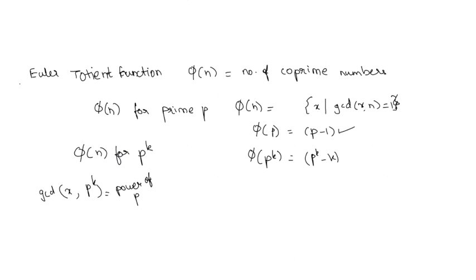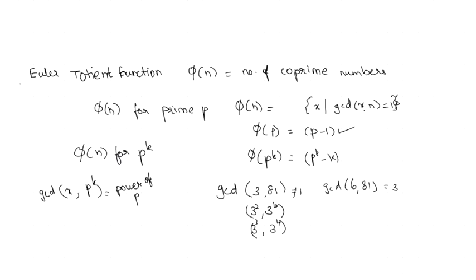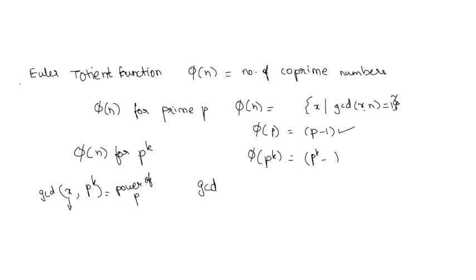Let's take an example: 81, which is 3 to the power 4. The GCD of any number with 81 can either be 1, or it can be 3, or 9, or 27. For instance, GCD(5, 81) = 1, and GCD(18, 81) = 9, since 18 = 2×3×3 and 81 = 3×3×3×3, giving common factor 9.